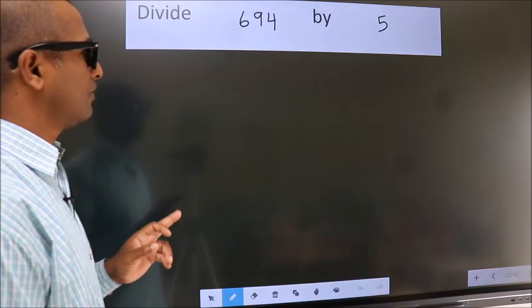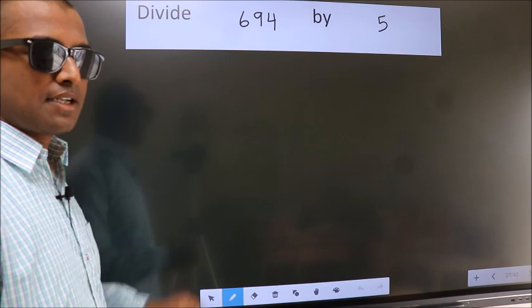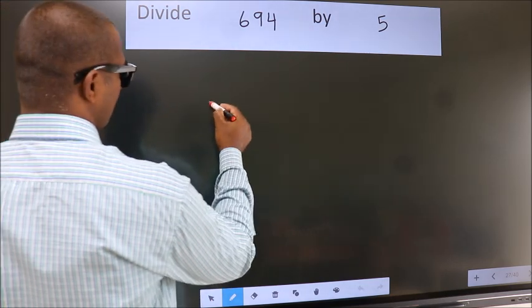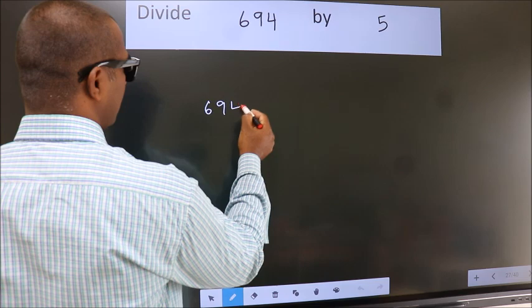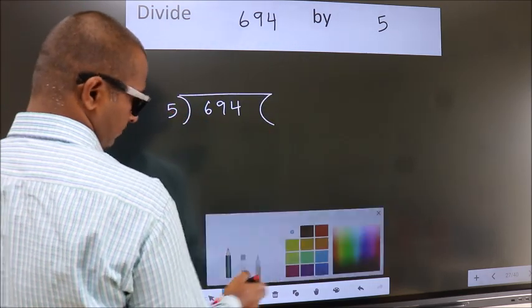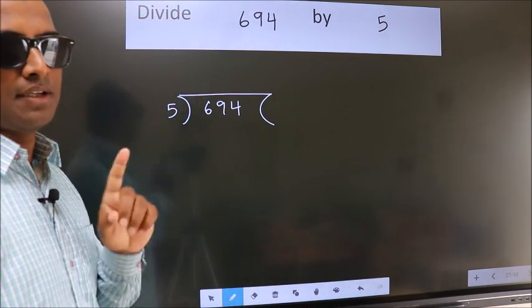Divide 694 by 5. To do this division, we should frame it in this way: 694 here, 5 here. This is your step 1.